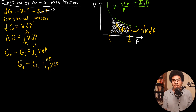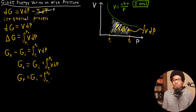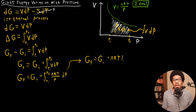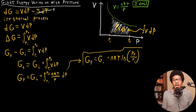We know that for an ideal gas we can actually solve this integral. We substitute the ideal gas volume into the integrand, giving us nRT over P times dP. We've solved this integral before for other thermodynamic variables, so we know it equals nRT ln(P_f / P_i). This gives a general relationship for an ideal gas to solve for the Gibbs energy change when you know the pressure range of your expansion or compression.